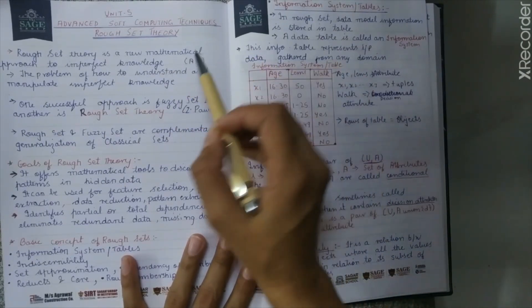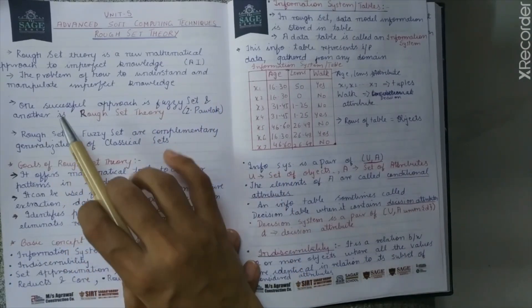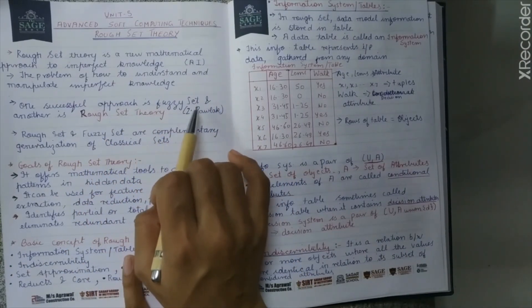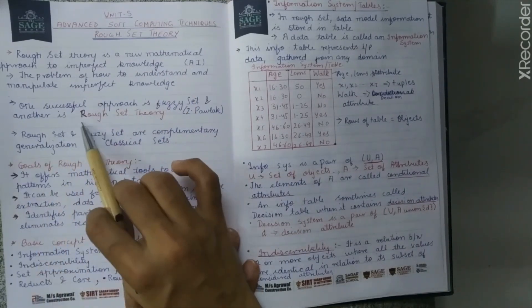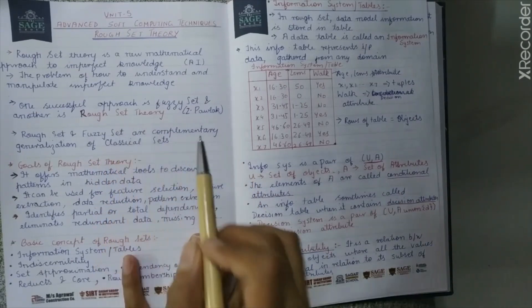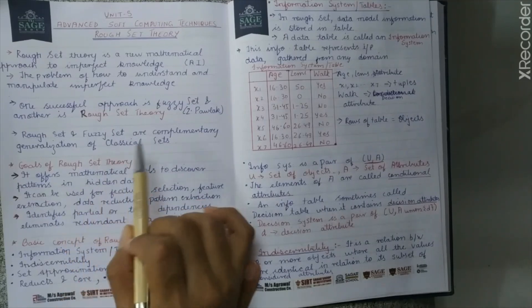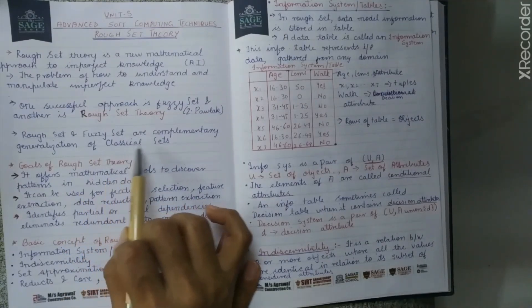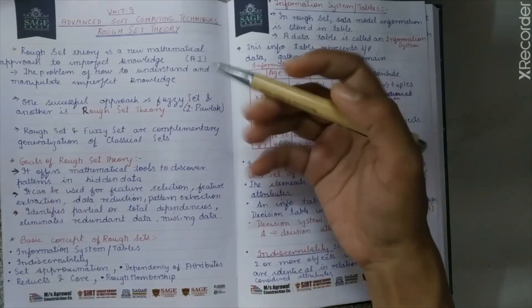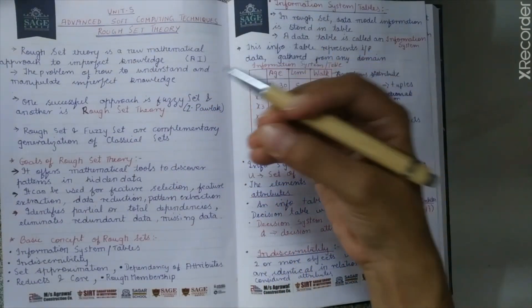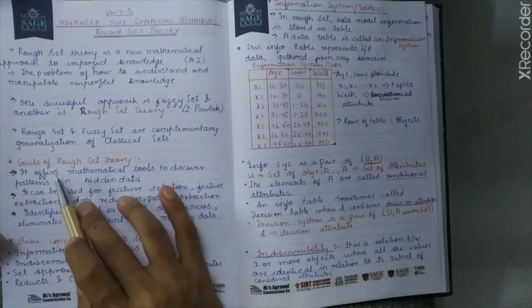This is a successful approach to one of the most important problems in AI. Rough set theory and fuzzy set theory are complementary generalizations of classical sets. Rough set theory is a mathematical approach which works to manipulate and understand our imperfect data.